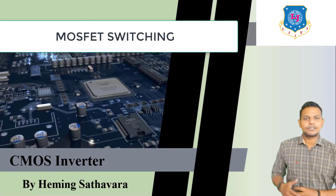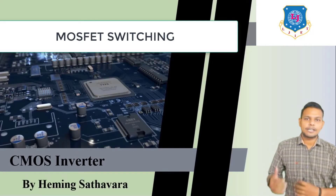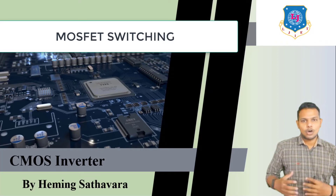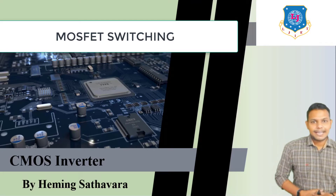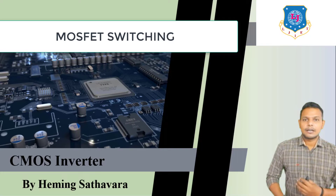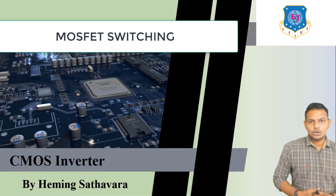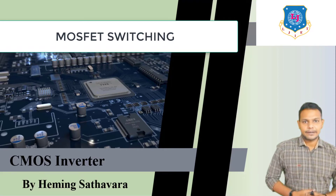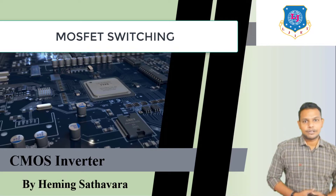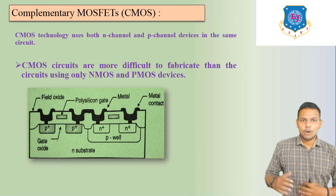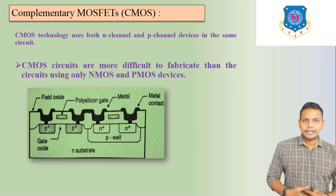Hello everyone, in this lecture we are going to discuss about CMOS inverter. CMOS means complementary metal oxide semiconductor. As we discussed in the previous lecture about MOSFET and FET, it is another type of MOSFET. In CMOS we are going to use various MOSFET circuit diagrams, and then it becomes a CMOS inverter. Its full form is complementary metal oxide semiconductor field effect transistor.